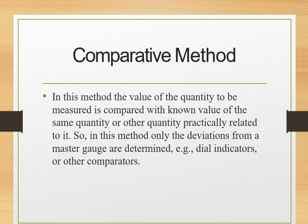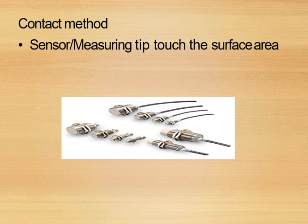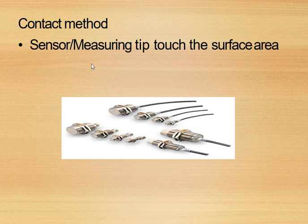In the contact method, the sensor or measuring tip touches the surface area being measured. If the sensor or measuring tip is not touching the surface area to be measured, then it is called the contactless method. The contact method is simply where the sensors or measuring tips touch the surface area.